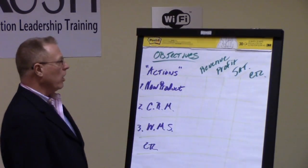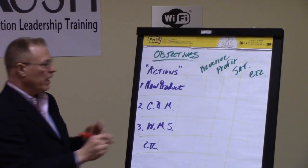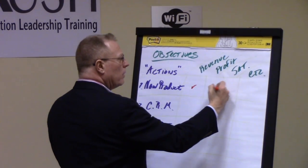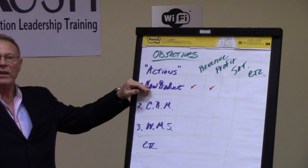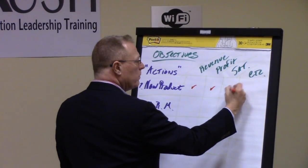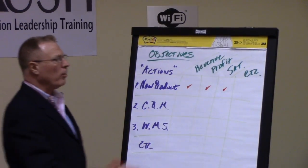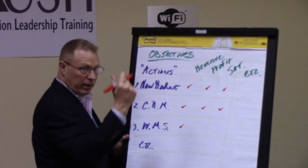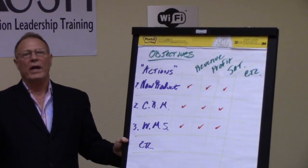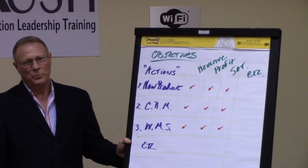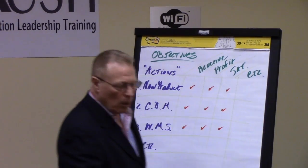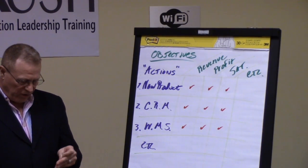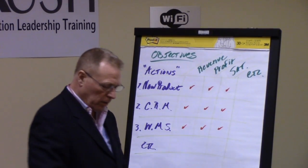I get to the first cell and I go: this new product launch will help increase revenue. Someone says yeah. Could it help increase profit? Somebody made the argument, yeah. Could it increase customer satisfaction? Somebody made the argument, yeah. Could customer relationship help increase revenue? Profit? Customer sat? Warehouse management — revenue? Believe it or not, somebody made the argument yeah. Forty minutes later we had a page of check marks. Not particularly valuable. Most textbooks are not written by people that actually facilitate. The problem with this approach, quite simply, is it relies on what's called a close-ended question.